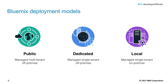Bluemix supports a range of deployment models. IBM Cloud supports public environments, meaning services and runtimes are available for use by anybody within IBM data centers. There's a dedicated model, where services and runtimes are provided for a single organization within the IBM Cloud. And lastly, there's the local model, where cloud services are deployed behind an organization's own firewall. Taken together, the Bluemix platform provides a rich set of features and deployment options to meet every need.